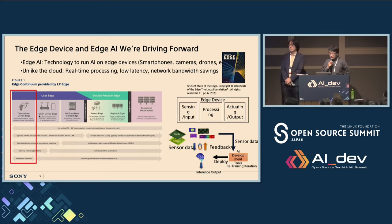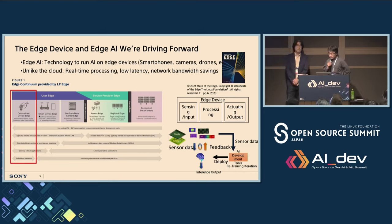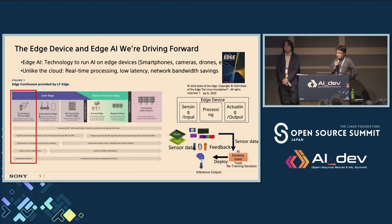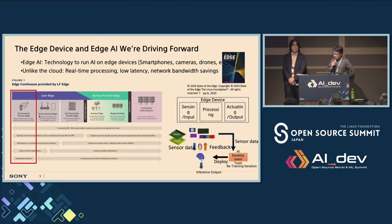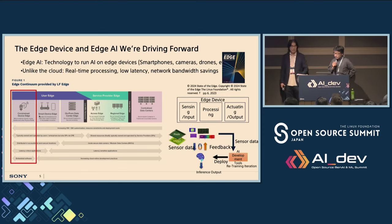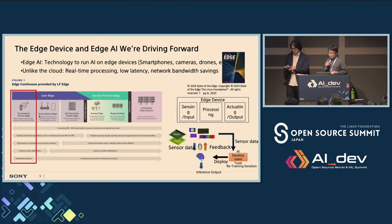I will mention the definition of edge device and edge AI. You can see this document shows some edge device categories. Today we mean the most left one in this picture. An edge device is a device that processes data, such as a smartphone, camera, or drone — separate from the cloud side. Edge AI is a technology that runs AI directly on those edge devices, such as smartphones, cameras, and drones, to process data and make decisions on the fly.